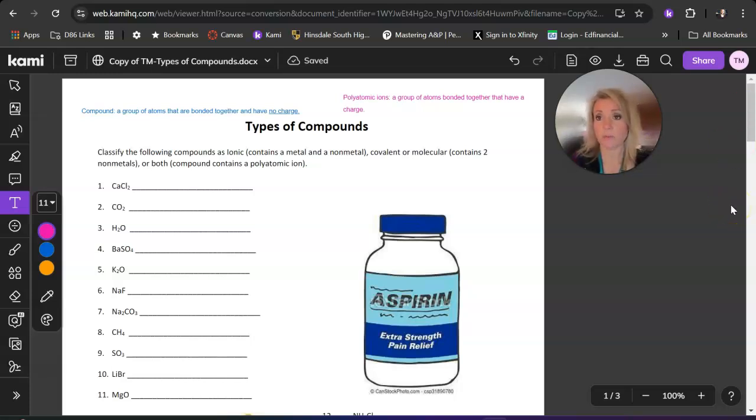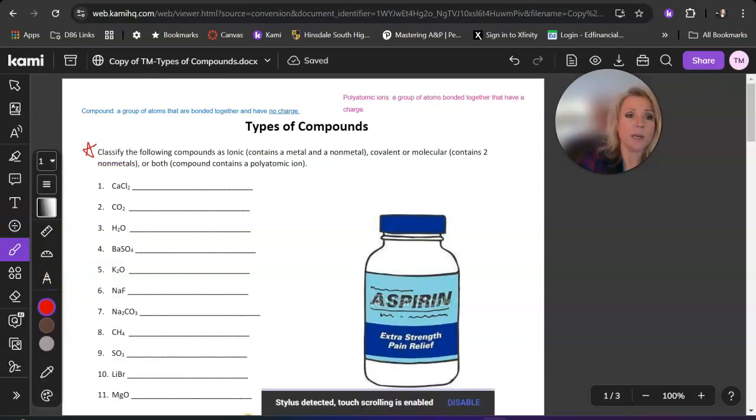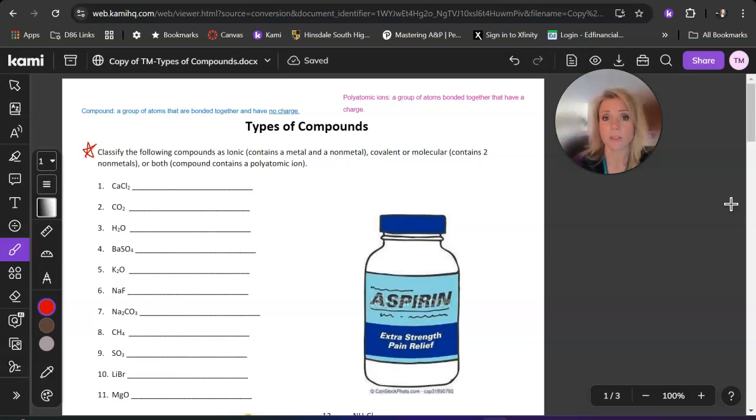So what I wanted to do is do a couple of examples on this worksheet for you so that you can see what we're doing as far as classifying these different kinds of compounds. So it says here in our directions that we need to classify the following compounds as ionic, which means that it contains a metal or a non-metal, covalent or molecular. These are compounds that have two non-metals in them. Or it could be both. A compound that contains a polyatomic ion. So I'm going to show you how to identify those.